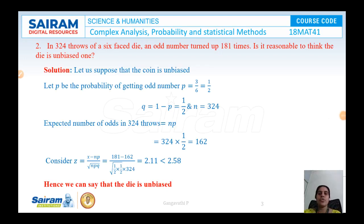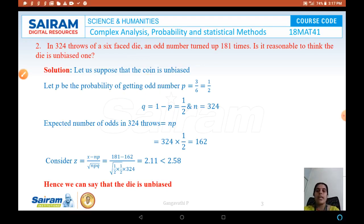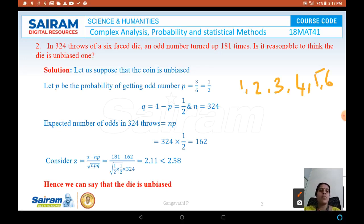In 324 throws of a six-faced die, an odd number turned up 181 times. Is it reasonable to think the die is an unbiased one? Let us assume the die is unbiased. The possible outcomes when throwing a die are 1, 2, 3, 4, 5, and 6 — six outcomes in total. The odd numbers are 1, 3, and 5, giving three favorable cases out of six. Therefore P = 3/6 = 1/2.